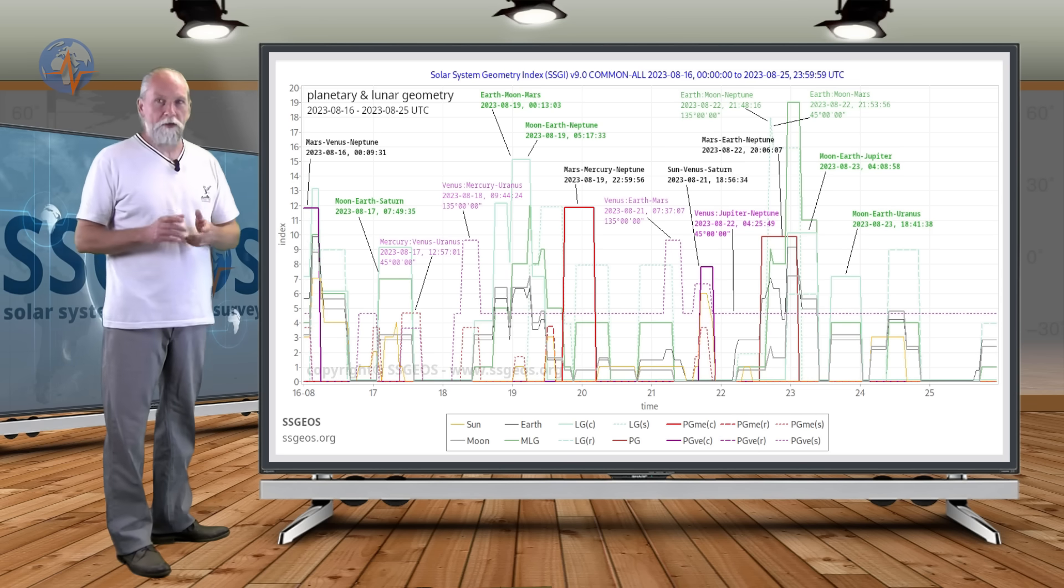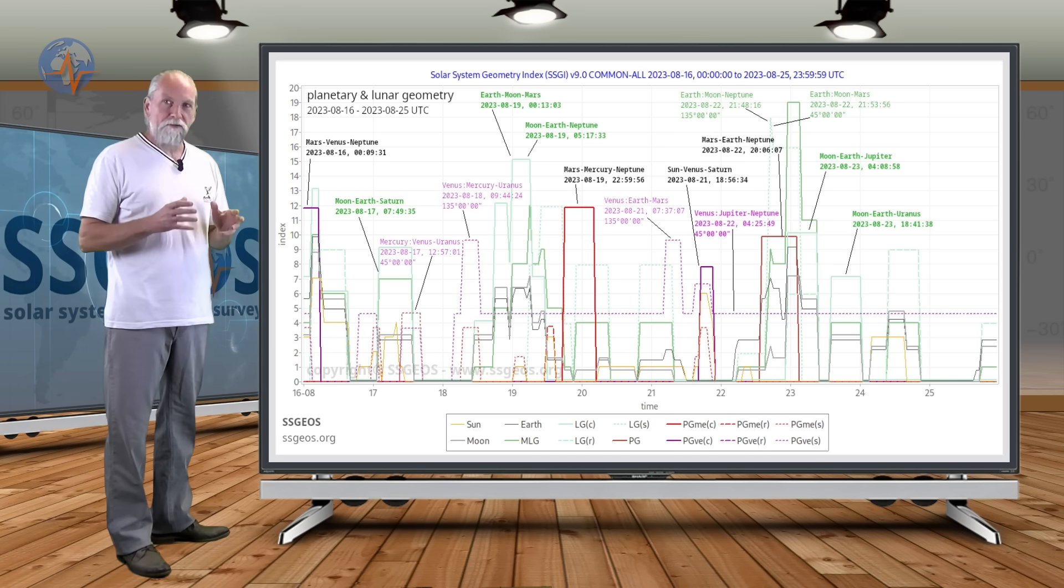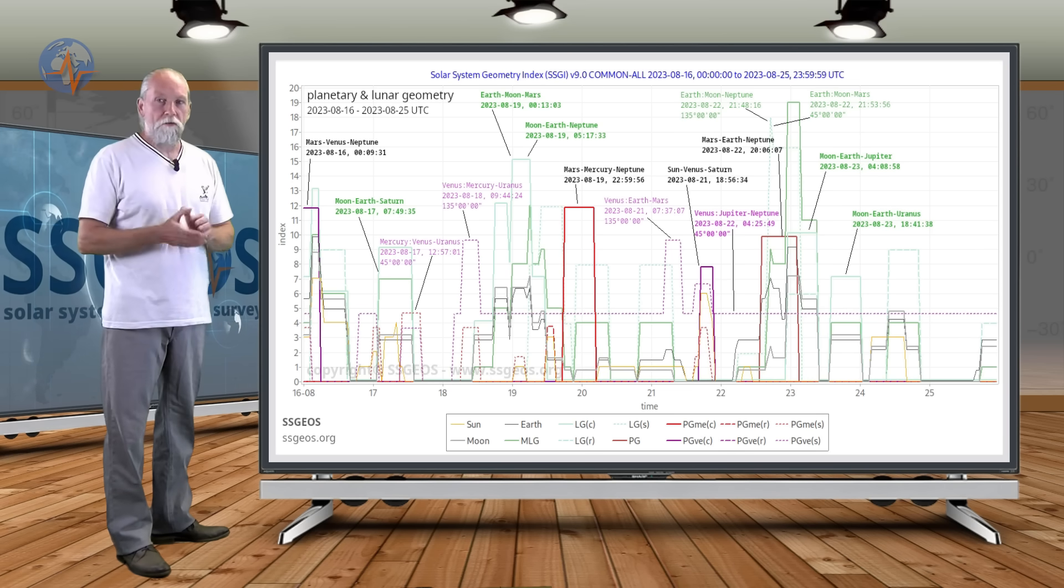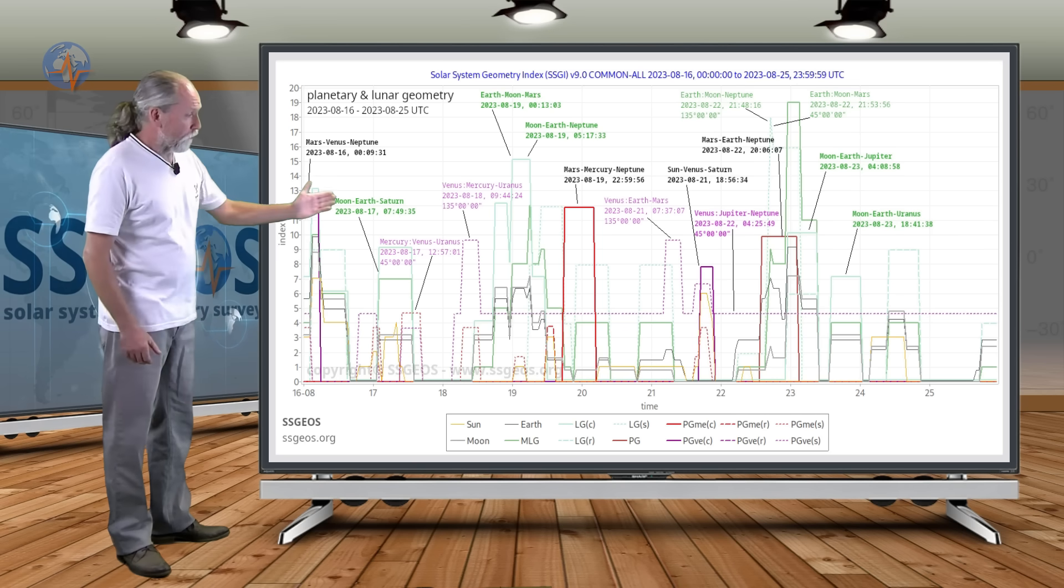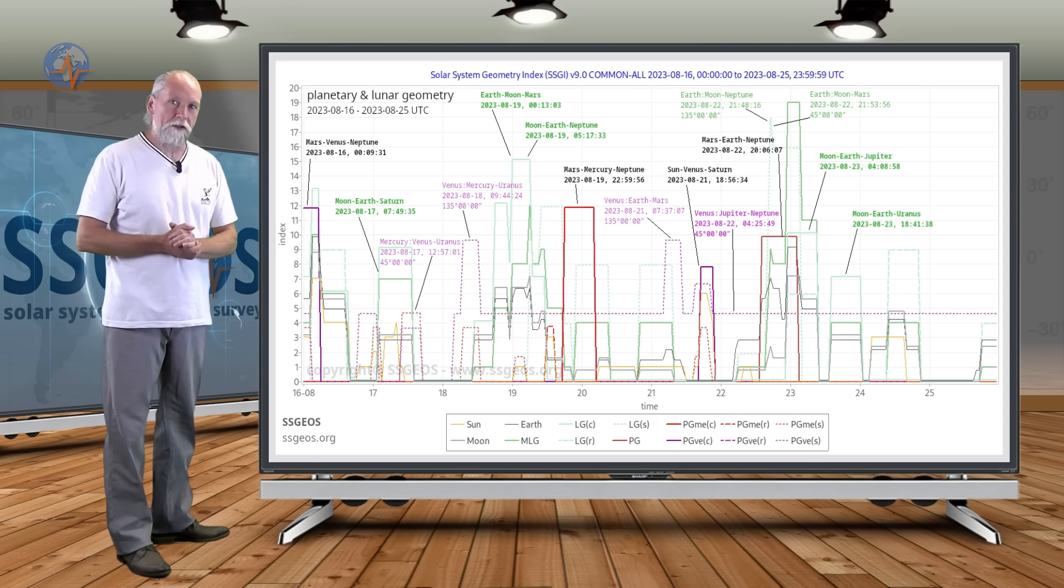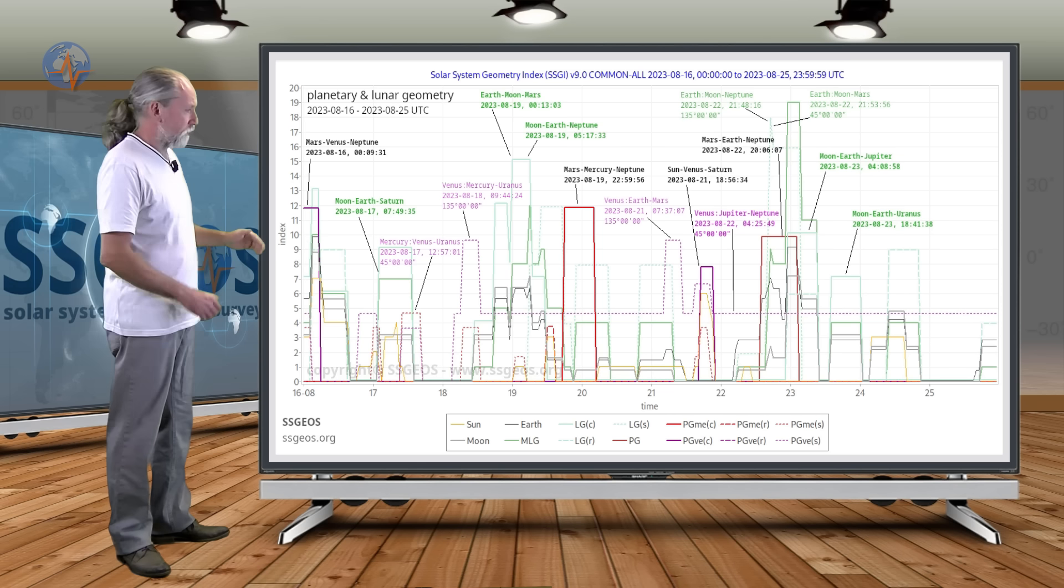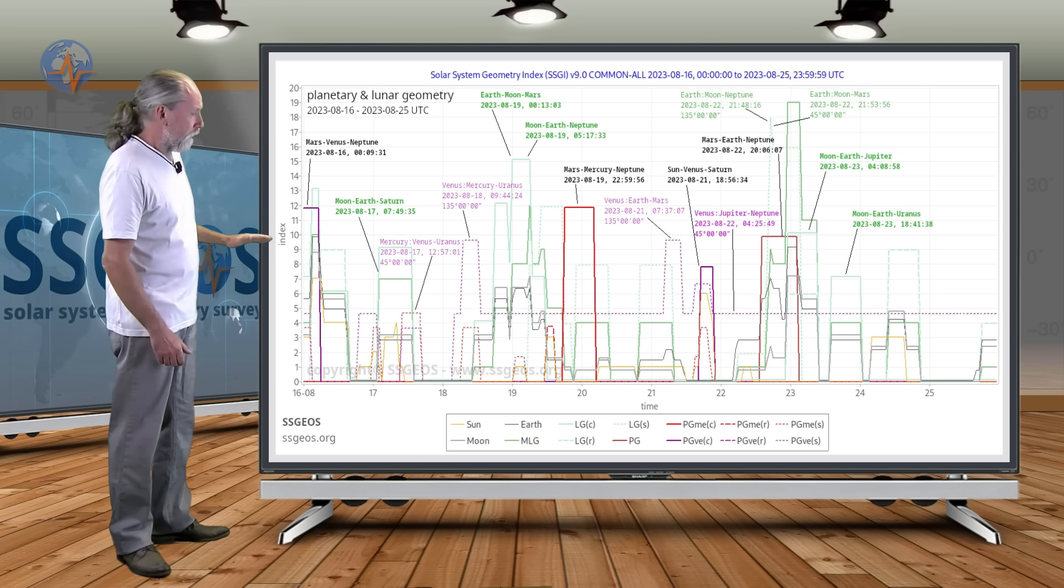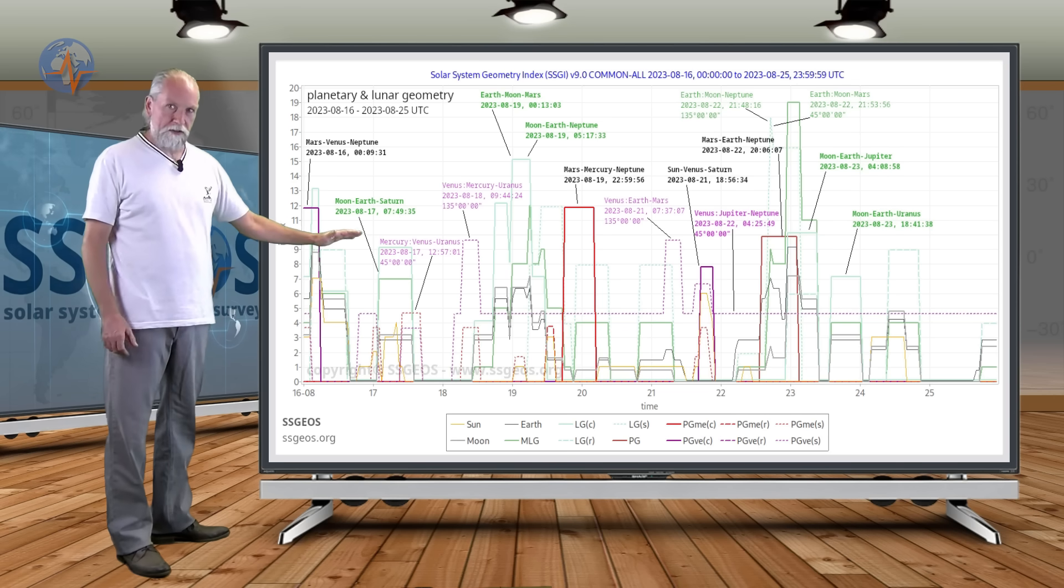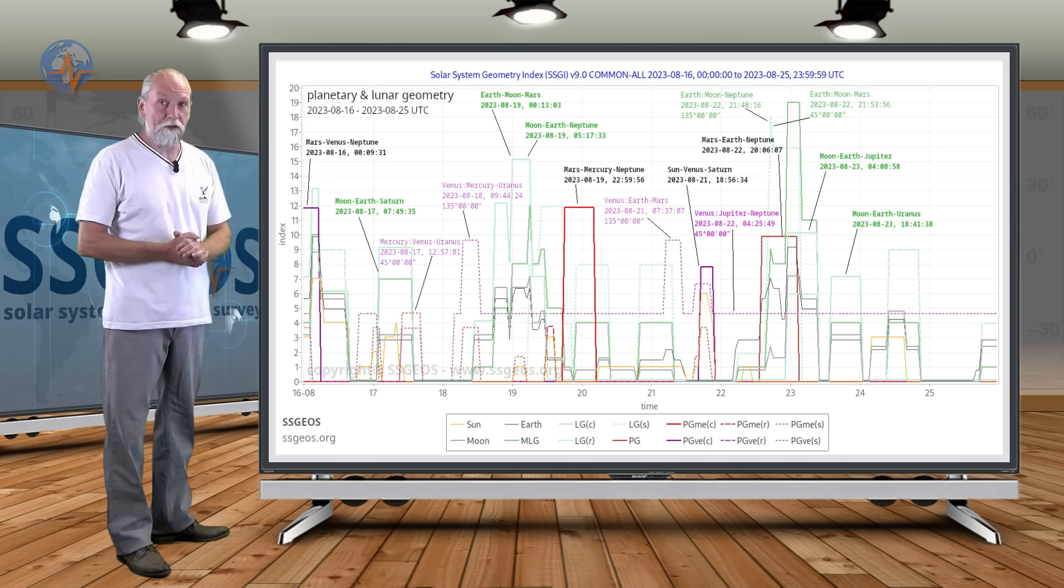But because Jupiter and Neptune do not move very fast and Venus relative to the position of Jupiter and Neptune, this 45 degree angle will be very active over several days as you can see here. And mind you the tolerance the planetary tolerance is only 0.17 degrees. Which tells us that the dotted lines is marking the 45 degree angle which will be pretty much exact over several days. And that adds to the critical geometry that we already have in this time frame.